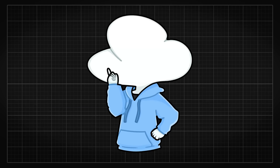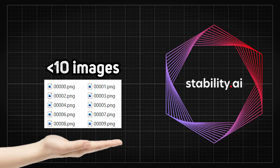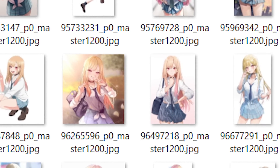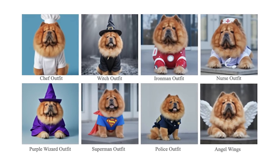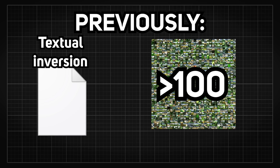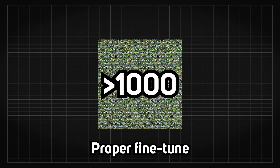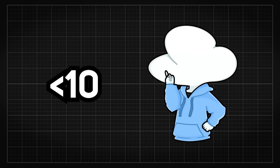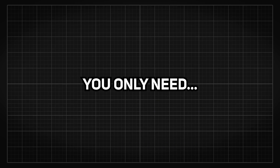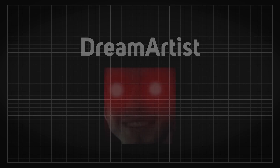To simplify DreamBooth even further: you just need to give an AI fewer than 10 images — sometimes as little as four — of a particular subject or specific art style, and it'll be able to recreate it in different settings easily. Compare that to before, where it took tens or hundreds of reference images for textual inversion, and maybe even a few thousands for a proper fine-tuning. Fewer than 10 is a huge leap — pretty amazing, right? Well, now you only need one.